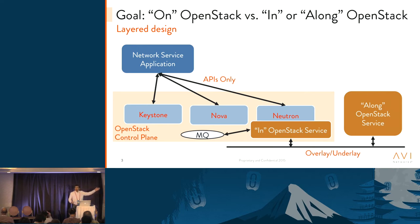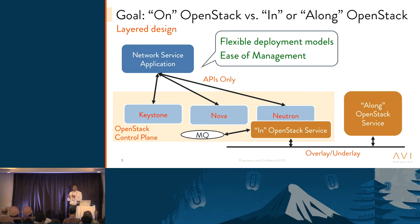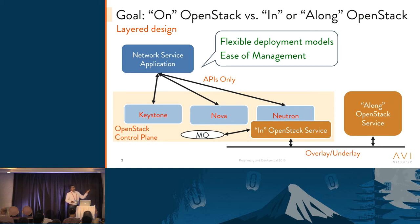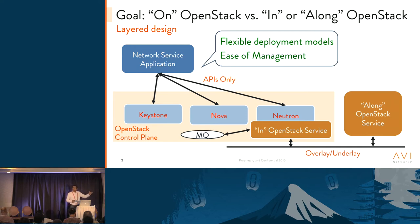Why build on top of OpenStack? It's a nice layered design — you get very flexible deployment models. The management of the service becomes easy. Think about how network stacks are built: L2, L3, L4 layers and so on. Having these nice layers allows innovation at higher layers easily if the bottom APIs are well defined.